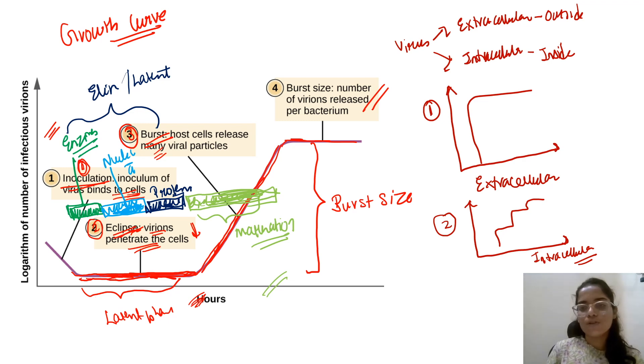This question came once in the exam. They gave as option: first option was extracellular, second option was intracellular, third option they gave bacterial growth curve, and fourth option was this curve. And the question asked was for extracellular virus. So this came in the paper one year.